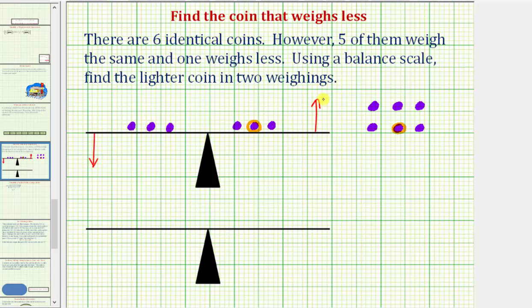So because the right side of the scale goes up, we know that the lighter coin would be one of these three coins here. So after the first weighing, we're down to three coins, one of which is lighter. Again, let's just say this is the lighter coin here.